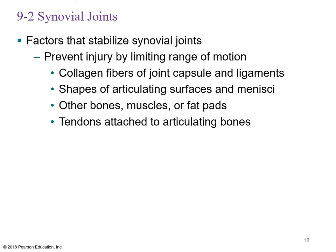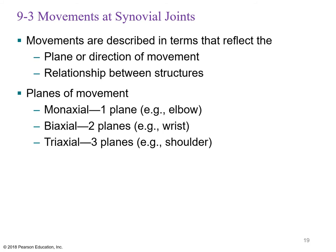Factors that stabilize synovial joints and limit range of motion include strong collagen fibers of the joint capsule and ligaments, the shapes of articulating surfaces and menisci, other bones, muscles, fat pads, and tendons.